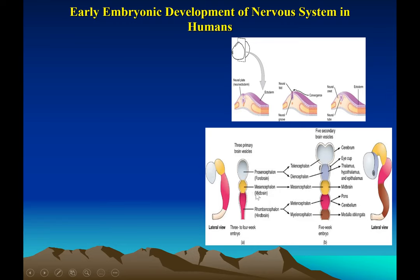The mesencephalon becomes the midbrain. The rhombencephalon is the hindbrain, and it differentiates into the metencephalon and myelencephalon, becoming the pons, cerebellum, and medulla oblongata. This is why nourishment during pregnancy is very important, because neural development begins from the third week onward.